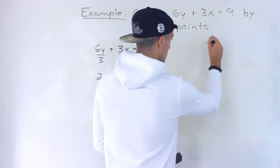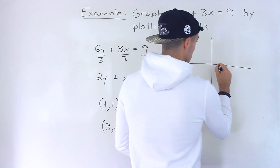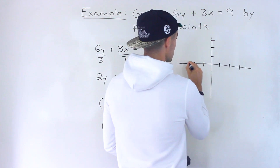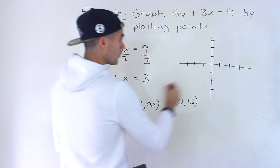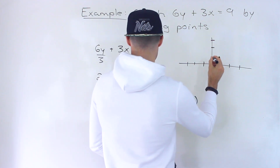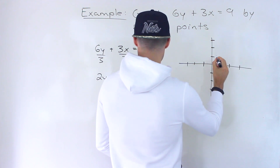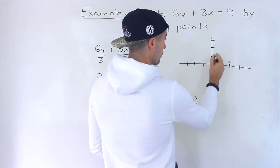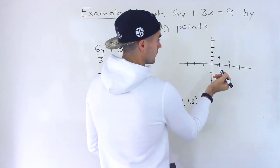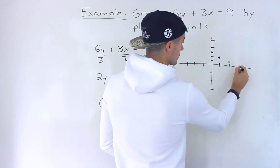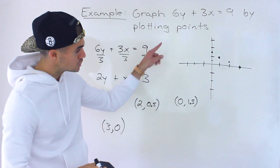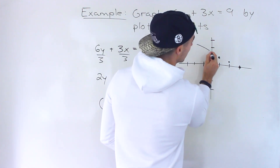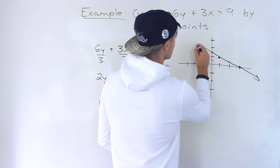If we take these points and plot them, keeping it to scale: (1, 1) is over here, (2, 0.5) is right there, (0, 1.5) is over here, and (3, 0) is over here. Notice that when you plot these points, they should form a line if the function is linear — and notice here we do get a line when we connect all of them.